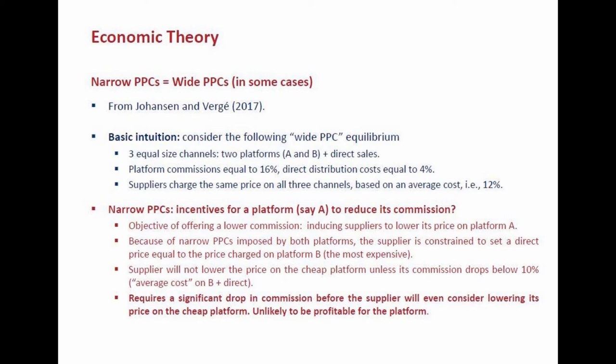The equilibrium with a wide MFN is one where platforms charge commissions of around 16%, while direct distribution costs only 4%. Suppliers look at their average cost: making one third of sales through each channel gives an average cost of around 12%. They base the price charged on all channels on that 12% average cost. With narrow parity, if platform A reduces its commission to induce suppliers to lower their price and attract more sales, the supplier is still constrained on its direct price because of the narrow price parity with platform B. Price parity with platform B means the average cost is the average of 16% and 4%, which is 10%.